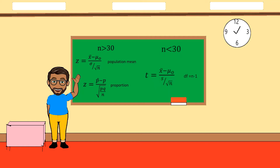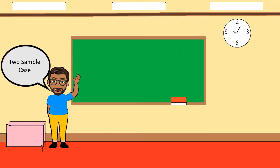If n is less than 30, we use the T-test for one sample case, where T equals the sample mean minus the population mean, all over the sample standard deviation divided by the square root of the sample size. The degrees of freedom equals n minus 1.